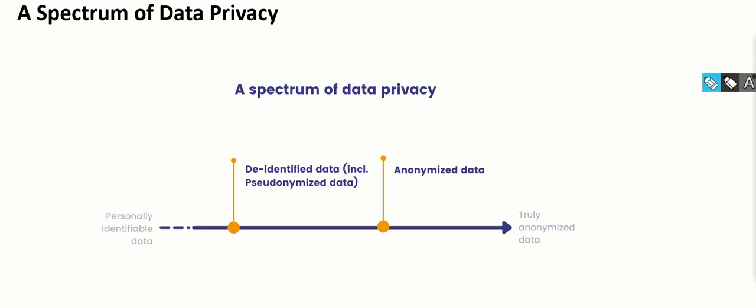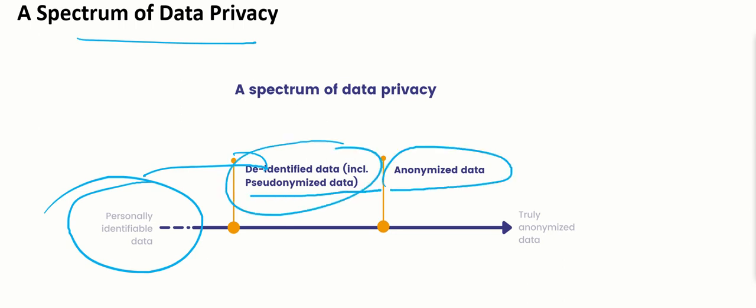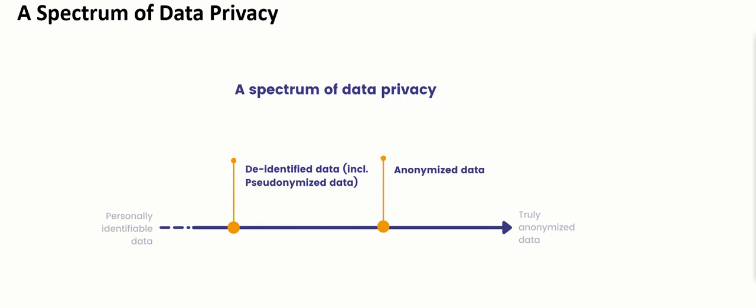This is the full spectrum of data privacy. From the moment we capture personal information, those wanting to understand more about personal data and the various regulations protecting it can refer to my other videos on personally identifiable information — I will provide links in this video. Personal data can be de-identified using either pseudonymization or anonymization techniques, resulting in truly anonymized data without any identifiers.